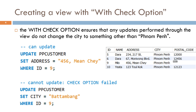If we update customer ID 9 to city Battambang, it will be removed from the view PP_customer. So with the WITH CHECK OPTION, we can ensure the consistency and the integrity of the data.